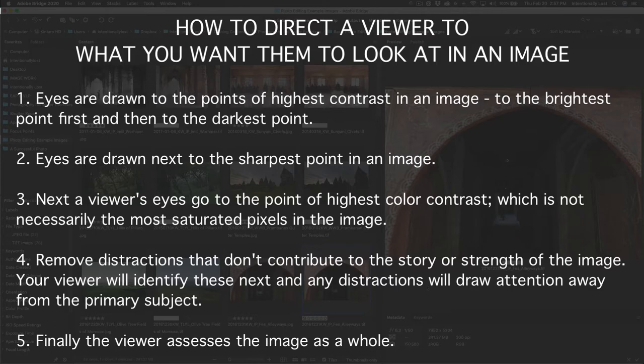And after that, then we look at color contrast — the difference between those lights and the darks — and then we move on to what are the next most saturated or most contrasty colors in the image. And then after that, we look at the image as a whole. All of this happens within about a half a second of the viewer first looking at the image, but that's the order that your brain wants to take in the image.